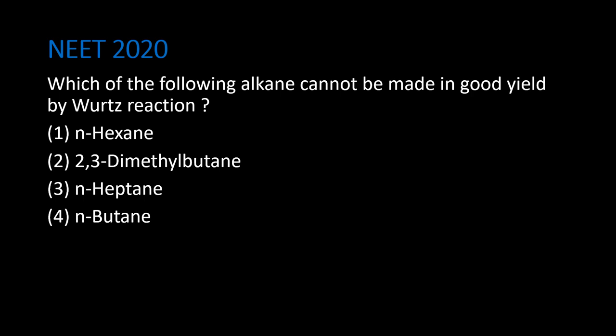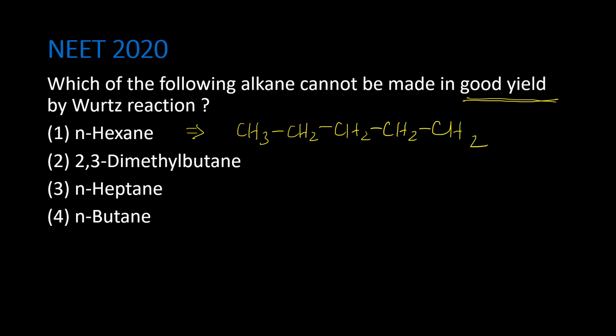Now coming back to the question: which of the following alkanes cannot be made in good yield by Wurtz reaction? N-hexane has 6 carbons — CH3CH2CH2CH2CH2CH3. Six is an even number, so n-hexane is a symmetrical alkane and can be made in good yield by Wurtz reaction.